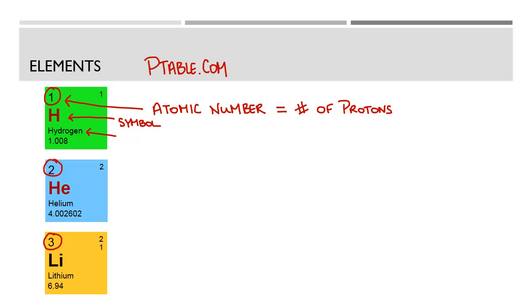Next, you'll find the symbol and the name. Now, every periodic table is arranged a little differently, but for the most part, they all contain the same information.